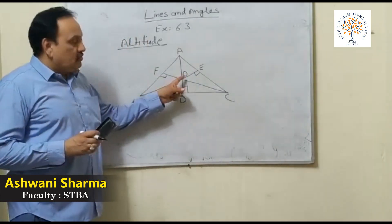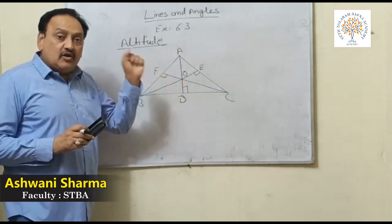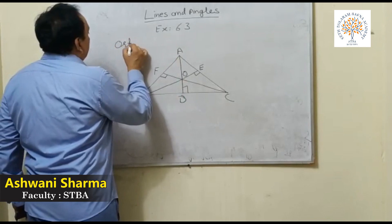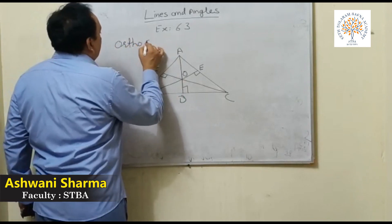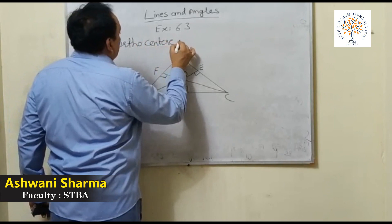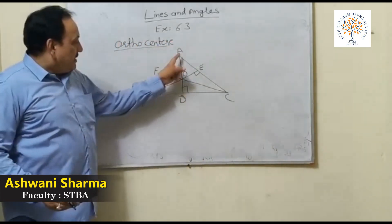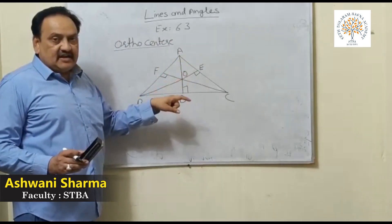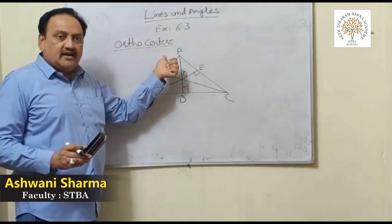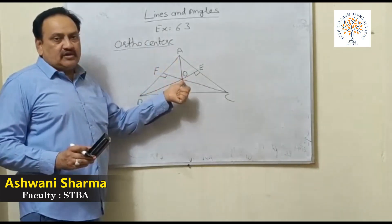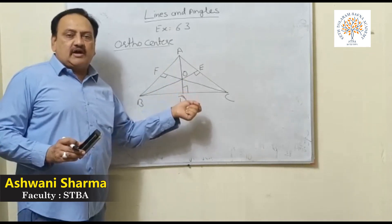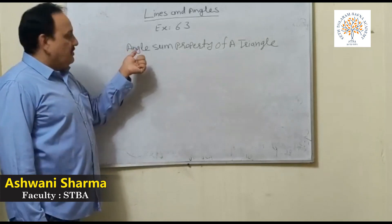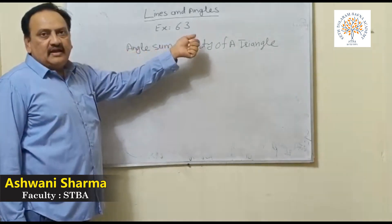The point where all the altitudes intersect each other is called the orthocentre of the triangle. O is the orthocentre of triangle ABC. In the next class, we will read the angle sum property of a triangle.